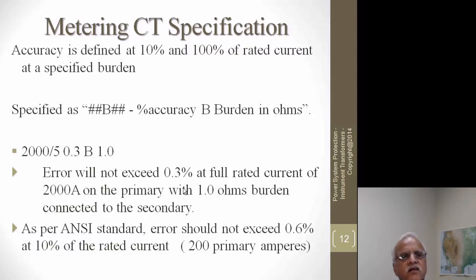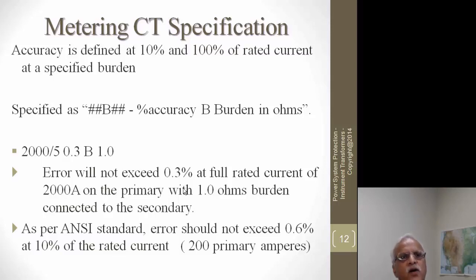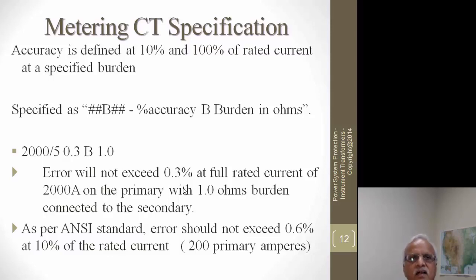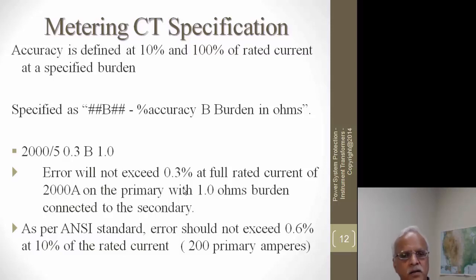Metering CT specifications are expressed as a number followed by the letter B and then another number — for example, 0.3B1.0. The '0.3' specifies the accuracy error: when the primary current is 2000 amperes and a one-ohm burden is connected, the accuracy error cannot exceed 0.3 percent. The ANSI standard also specifies that this error cannot be twice the specified value when the current is only 10 percent of rated — so at 200 amps, error cannot exceed 0.6 percent.